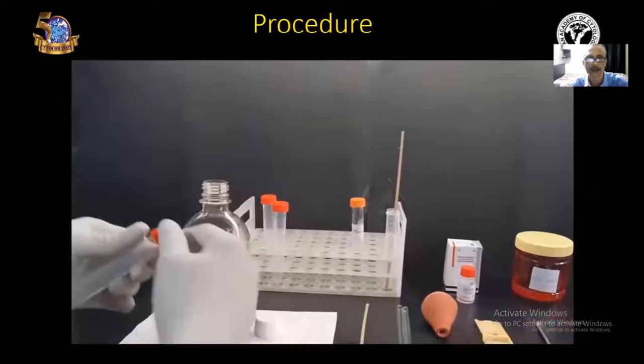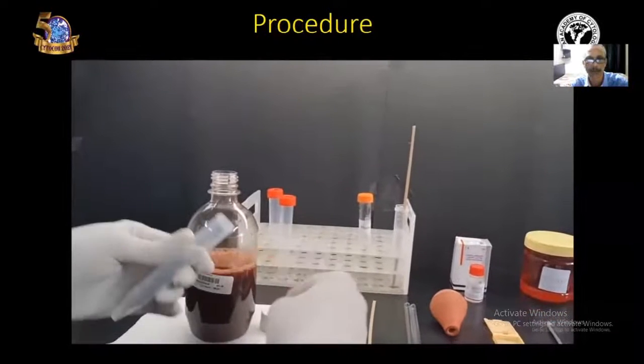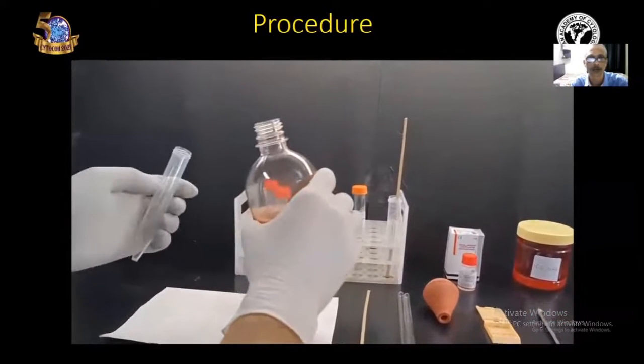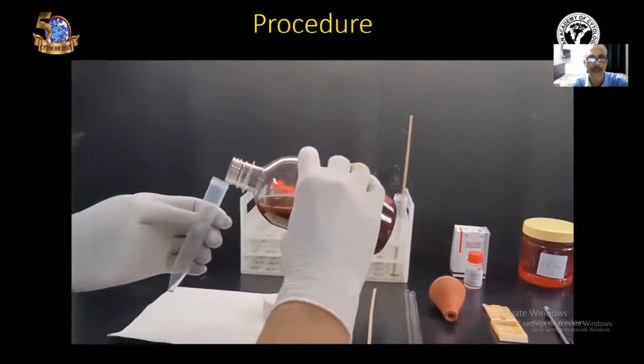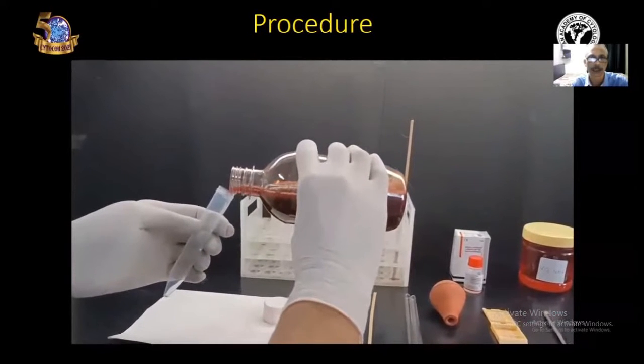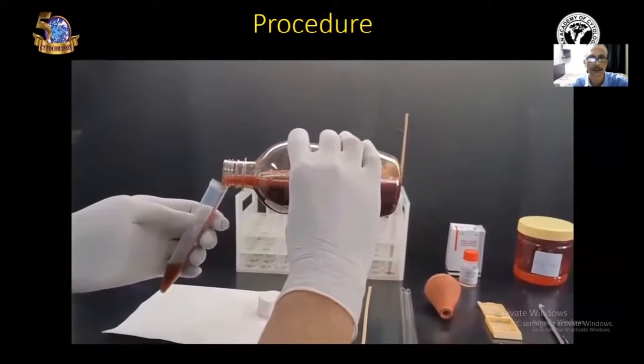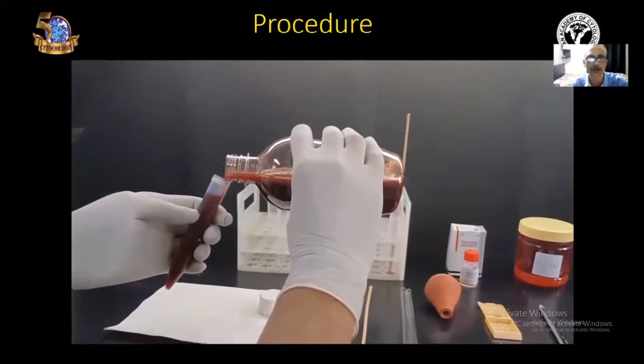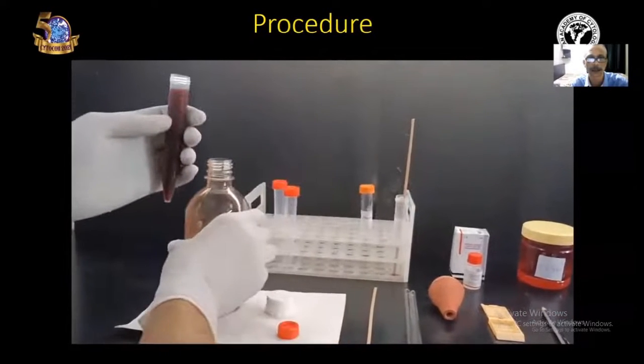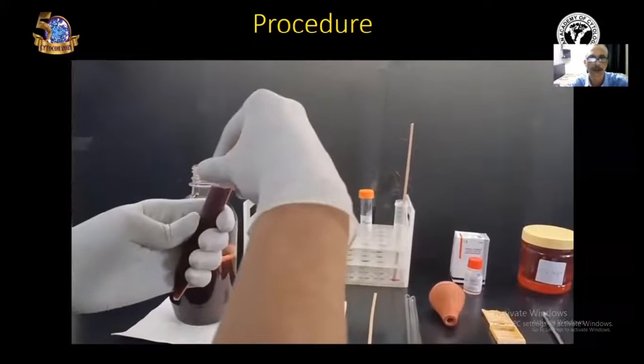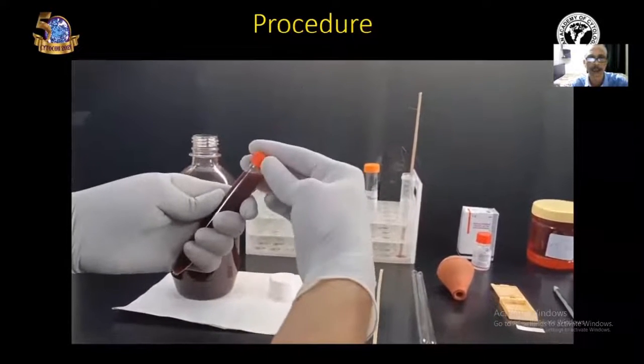Take out the centrifuge tube, remove the cap, and slowly put the sample into the centrifuge tube. Care has to be taken not to spill the sample. Once the sample is put, put the lid and secure the lid properly.